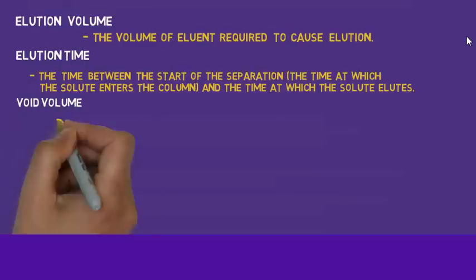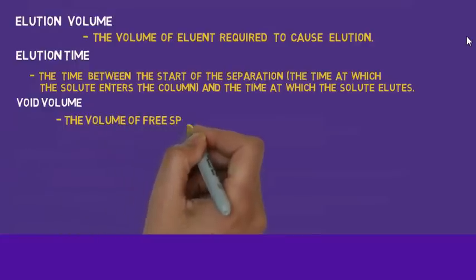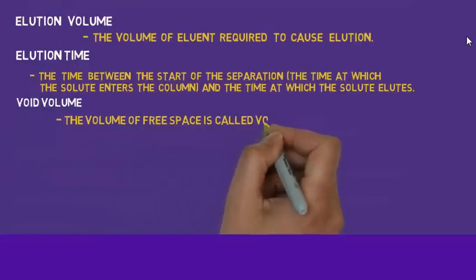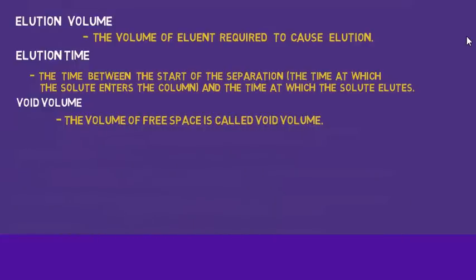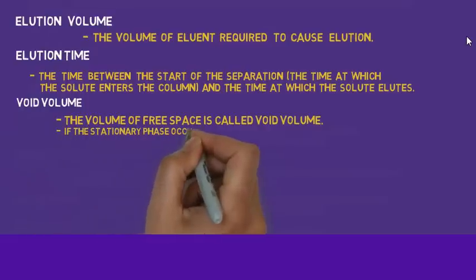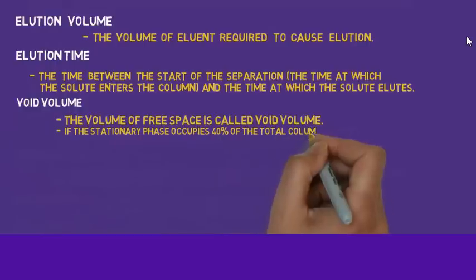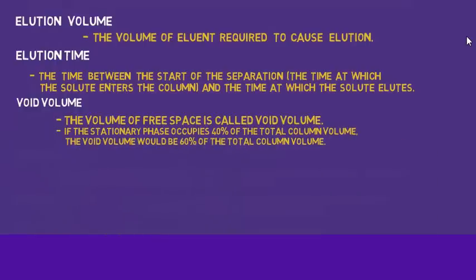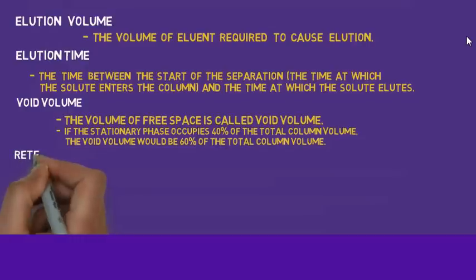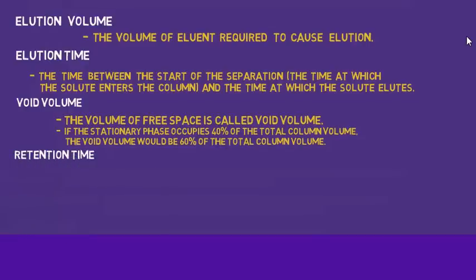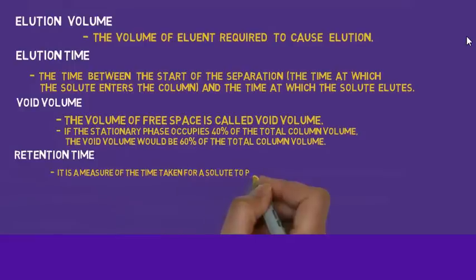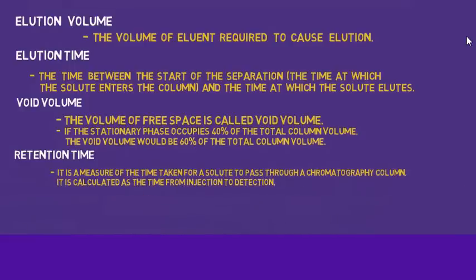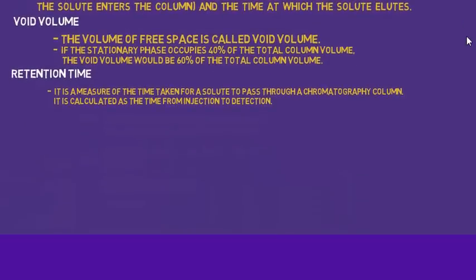Void volume is the volume of free space in the column. For example, if the stationary phase occupies 40% of the total column volume, then the void volume would be 60% of the total column volume. Retention time is a measure of the time taken for a solute to pass throughout the column.